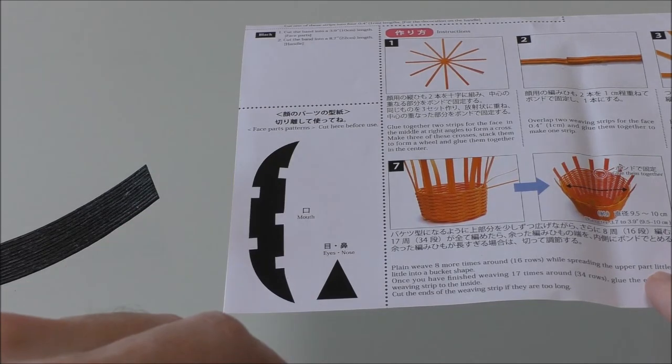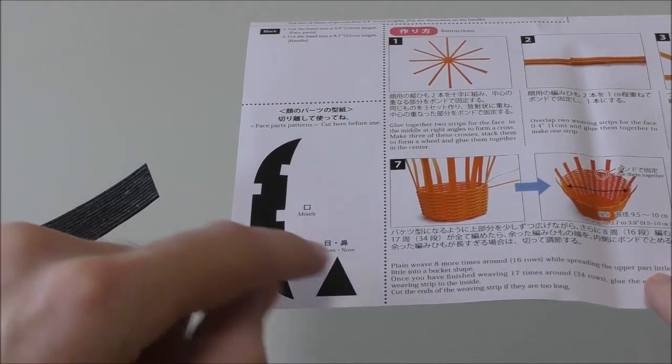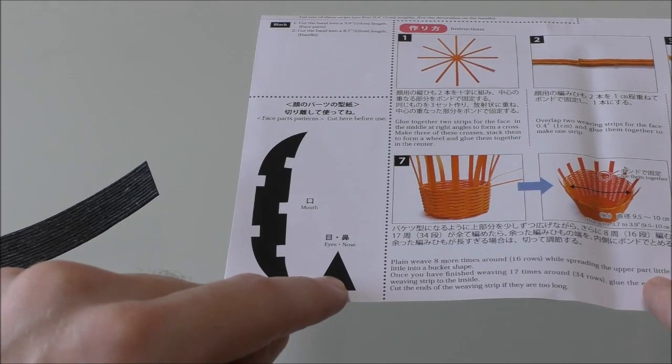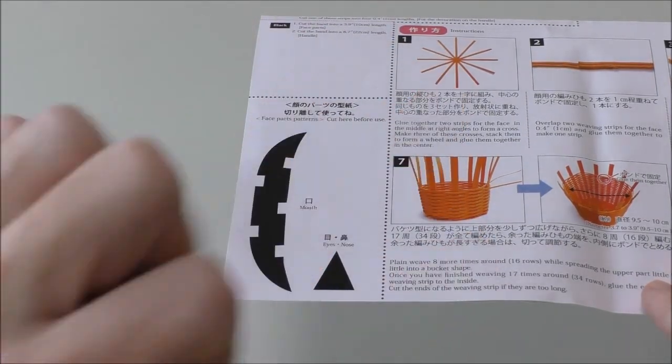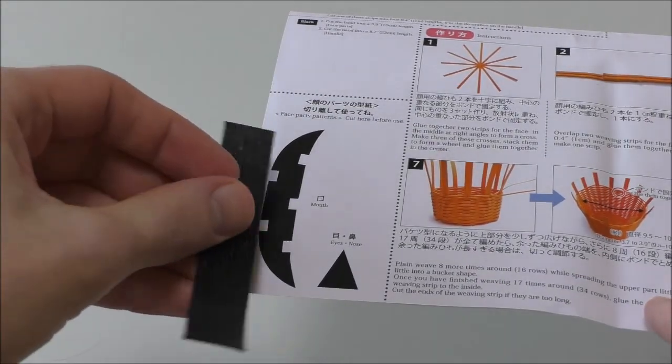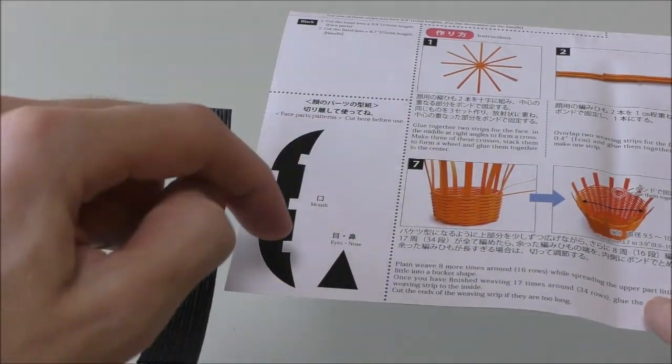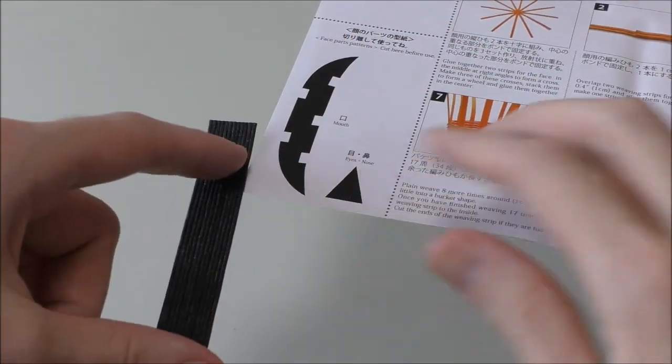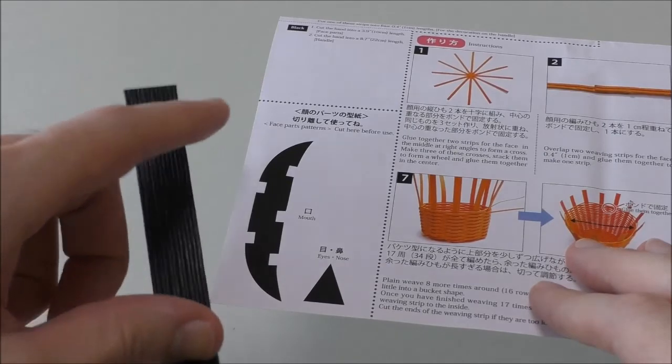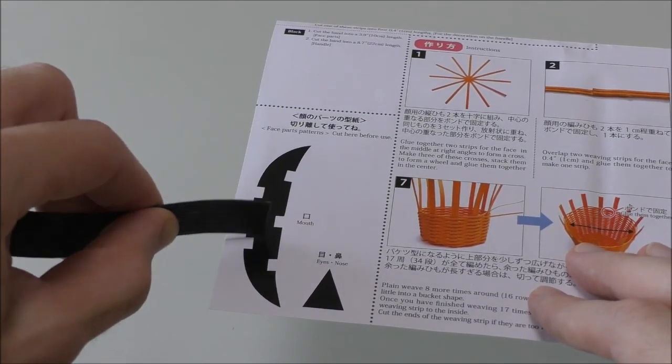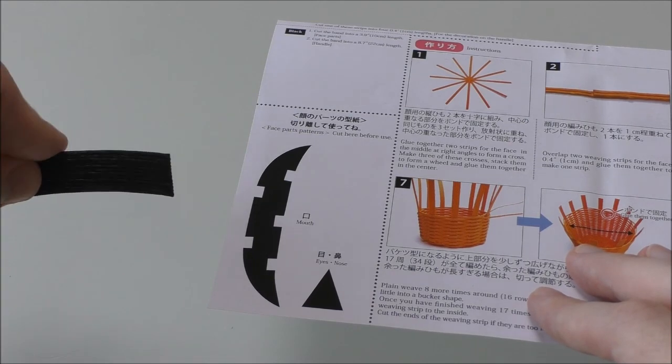And to make the facial decorations all you need to do is follow the stencils on the page here. Essentially we're going to need three triangles, two for the eyes, one for the nose, and then the mouthpiece like that. Now the instructions do recommend cutting these out and then using a chalk pencil to draw the outline on the black strip before cutting them out. And I think that's probably the best thing to do. The triangles you can probably do freehand but the mouth you want to take a little bit of care with.